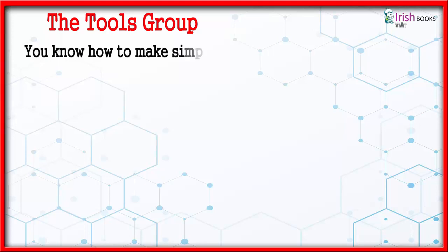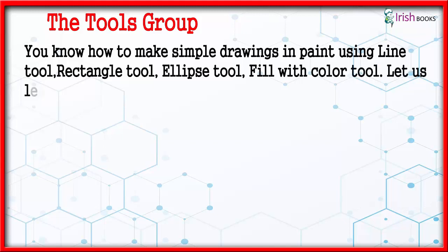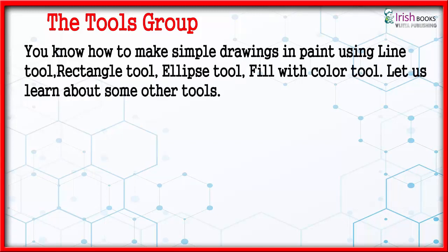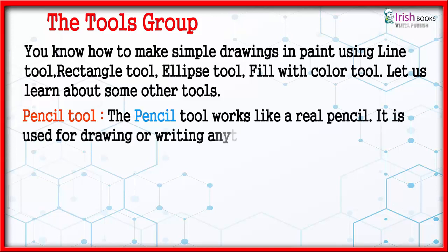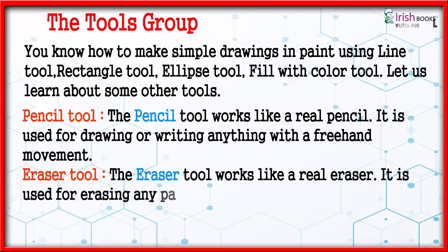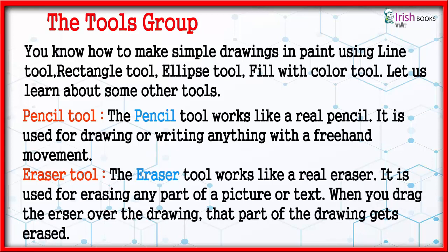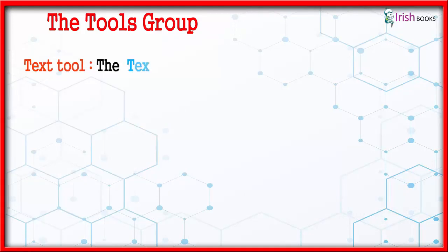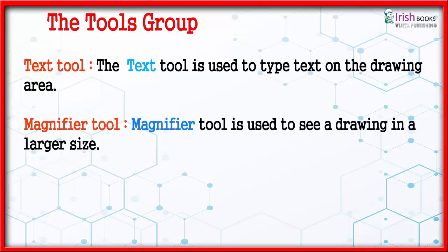You know how to make simple drawings in Paint using the Line Tool, Rectangle Tool, Ellipse Tool, and Fill With Color Tool. Let us learn about some other tools. Pencil Tool: works like a real pencil and is used for drawing or writing with free hand movement. Eraser Tool: works like a real eraser and is used for erasing any part of a picture or text — when you drag the eraser over the drawing, that part gets erased. Text Tool: used to type text on the drawing area. Magnifier Tool: used to see a drawing in a larger size.